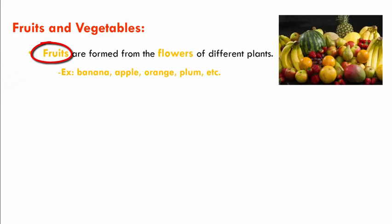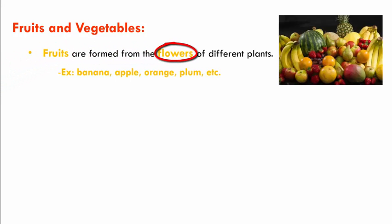The next type of foods obtained from plants are fruits and vegetables. Fruits are formed from the flowers of different plants. For example, banana, apple, orange, plum, etc.